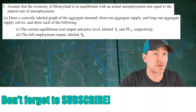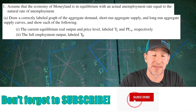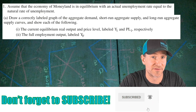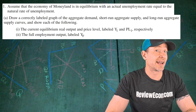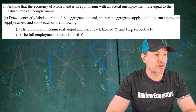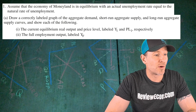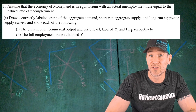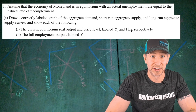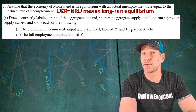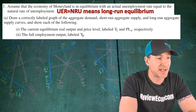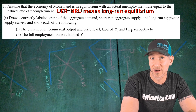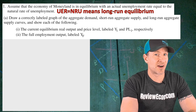This question starts off with the country of Moneyland. They are in equilibrium and the actual unemployment rate equals the natural rate of unemployment. We have to draw an AS/AD model and mark the current real output Y1, the current price level PL1, and the full employment level of real output YF. Since the unemployment rate equals the natural rate of unemployment, we are drawing an AS/AD model in long-run equilibrium.